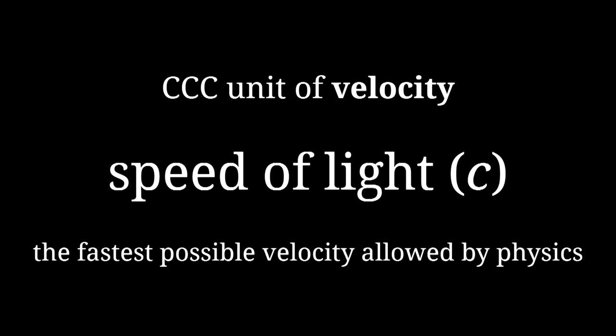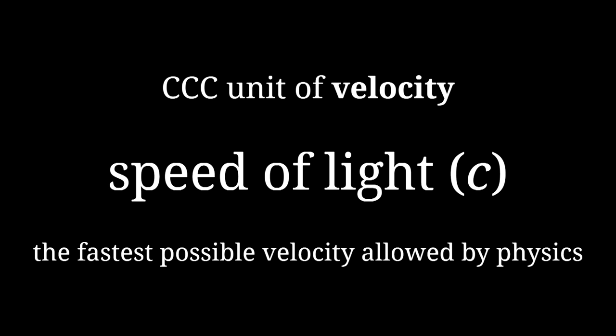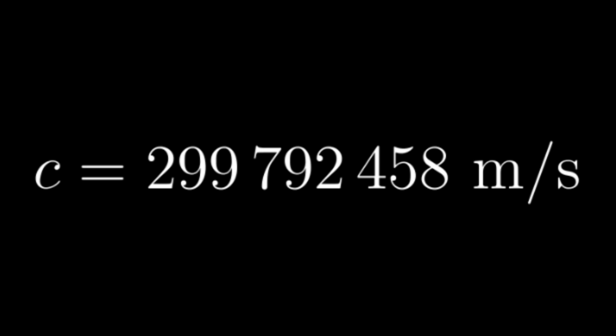First is the standard unit of velocity, the speed of light. The speed of light, commonly abbreviated to c, is a fundamental constant of the universe. It's the fastest possible velocity allowed by the laws of physics. In the CCC system, rather than representing velocity as length divided by time, it's represented far more elegantly as some multiple, or more accurately, some portion, of c. The speed of light is equal to 299,792,458 meters per second. That's not an approximation, by the way. The speed of light is used in the standard definition of the meter, so by definition, that is the exact value of the speed of light in meters per second.